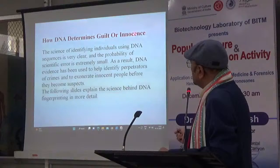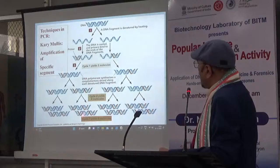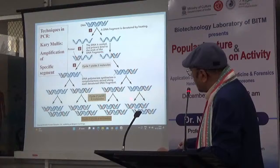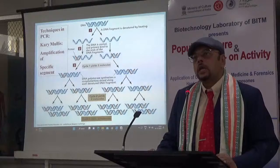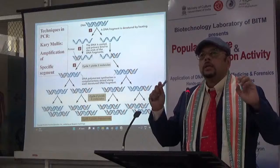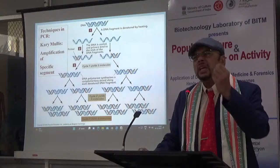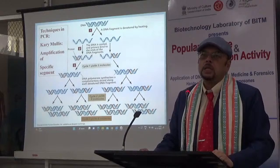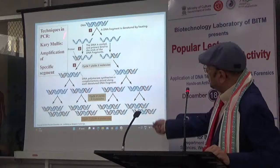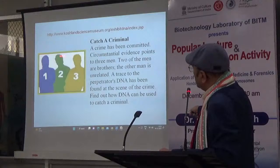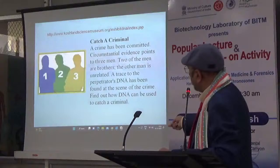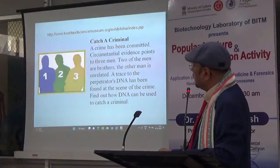DNA can determine guilt or innocence. In PCR applied to forensics: from a crime scene, evidence like nails, hair, body fluid is collected — you may get only three or four hairs. From hair follicles, you get a little DNA. Using PCR, you amplify the DNA sequence, make enough material from that small snippet, and later match it by DNA fingerprinting to find who committed the crime.